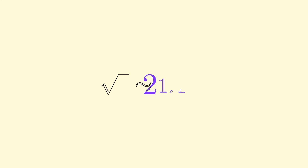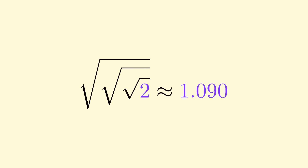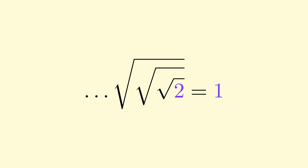Choose the number 2 and take its square root. This gives you a smaller number. Take the square root again, and it gets even smaller. If you keep taking the square root, it gets smaller and smaller, but still stays above 1. If you take the square root an infinite number of times, you'll actually get the number 1.